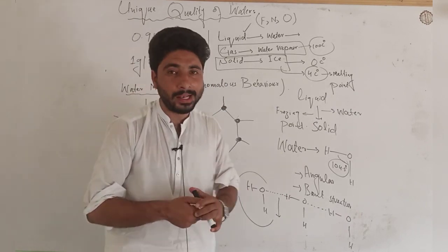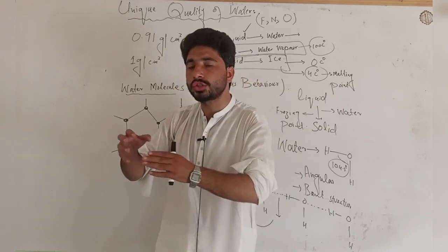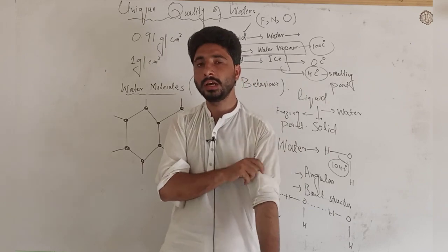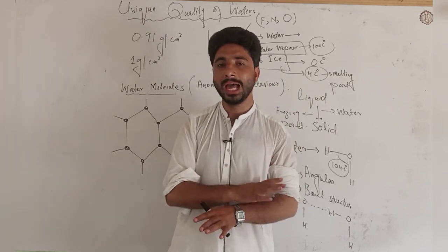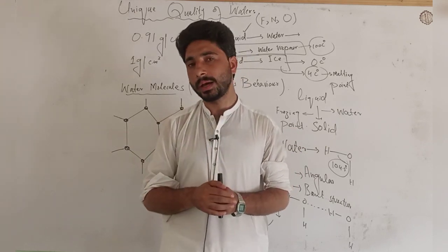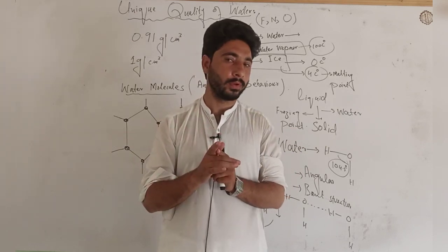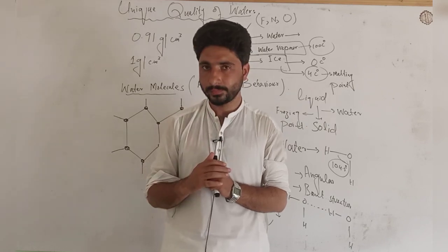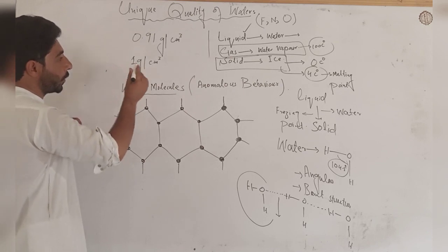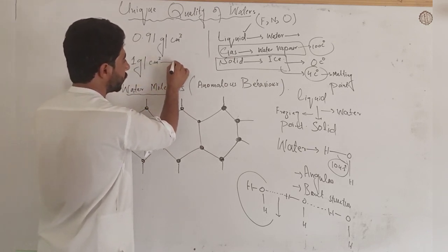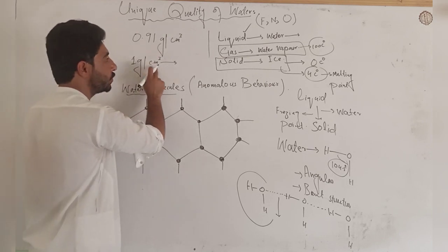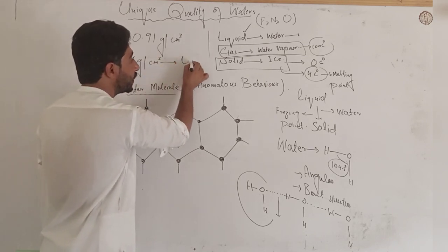For example, when water is in solid form — ice — its behavior is different from liquid. The density of water is one gram per centimeter cube, and that is for 4 degrees centigrade. At 4 degrees centigrade, water has its maximum density.